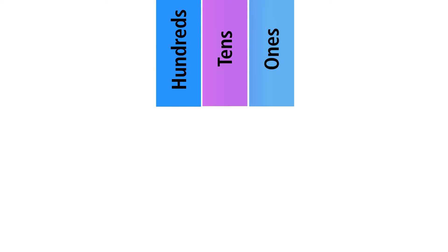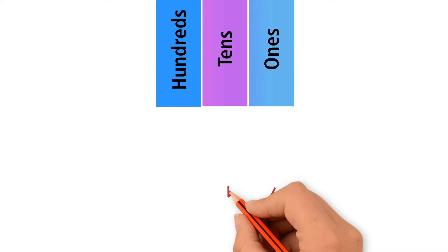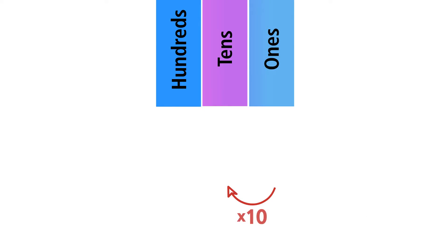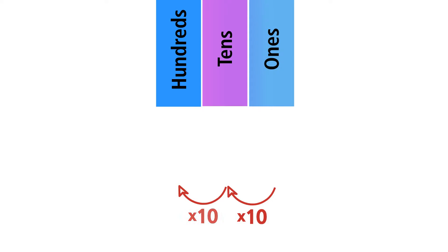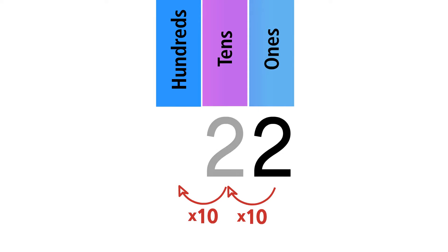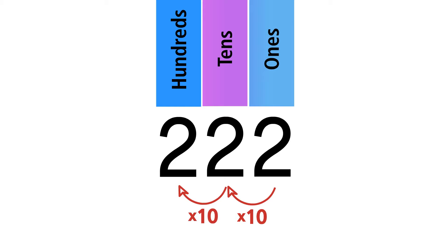Notice that each place is 10 times larger than the place to its right. We can easily see this when we put the same number into each place. We have a 2 in the ones place, a 2 in the tens place, and a 2 in the hundreds place.